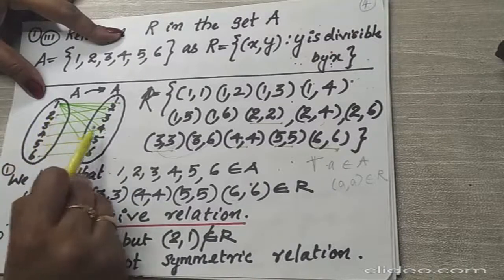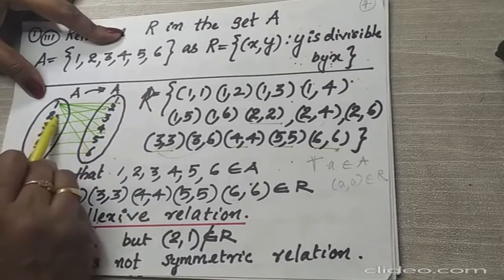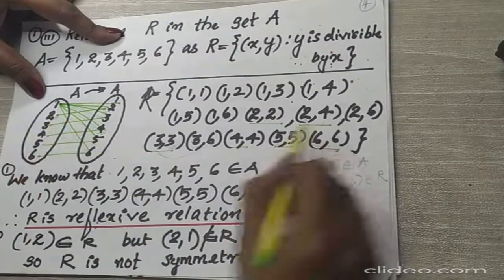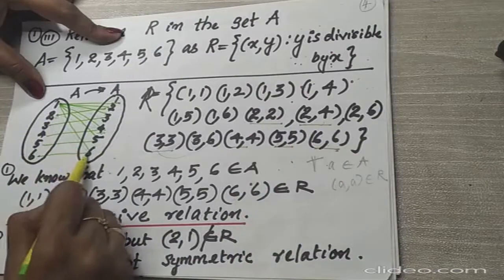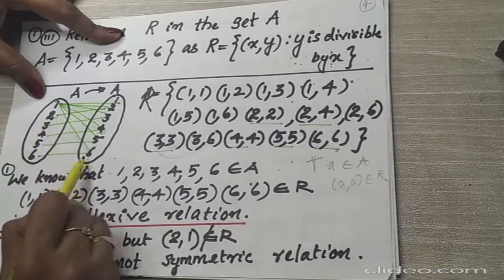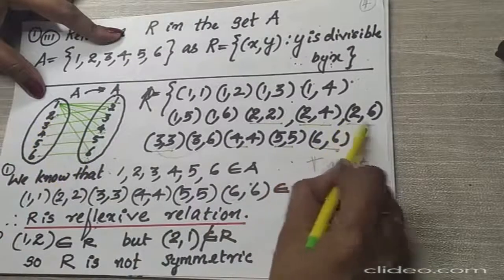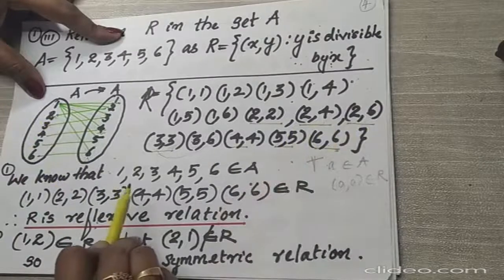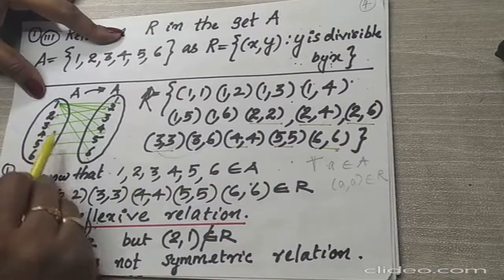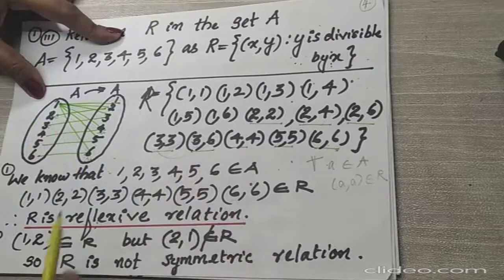Next, (2,4): 4 is divisible by 2, so (2,4) is included. Also (2,6): 6 is divisible by 2, so (2,6) is included. Similarly, (3,6): 6 is divisible by 3, so (3,6) is also included. These are all the ordered pairs which satisfy the given condition.